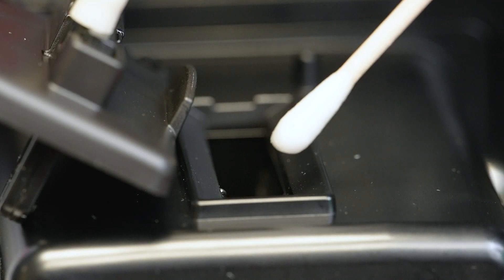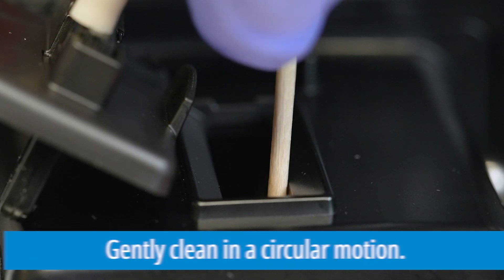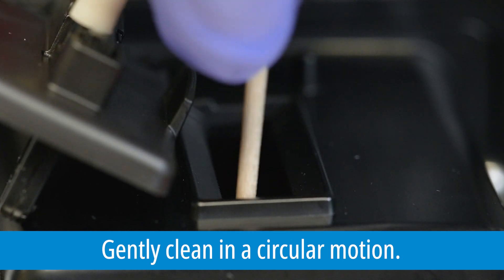Use lint-free cotton swabs to clean the colorimeter cell. It will be located on the front of the rectangular opening on the lid.